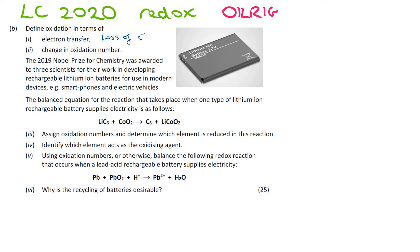Now, in terms of change in oxidation number: oxidation number is a number given to an element in a compound that indicates the number of electrons it uses to bond. So, in terms of oxidation, whenever you have an increase in oxidation number, then you have oxidation. Oxidation is an increase in oxidation number.